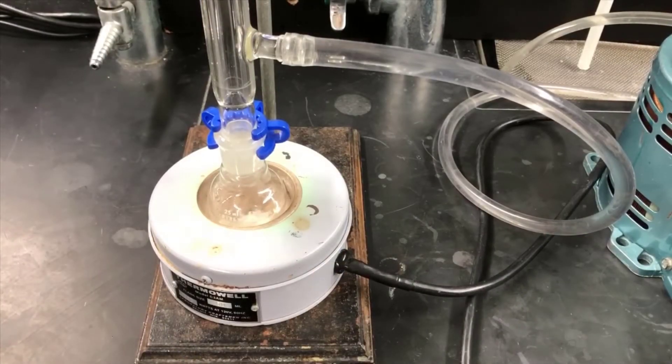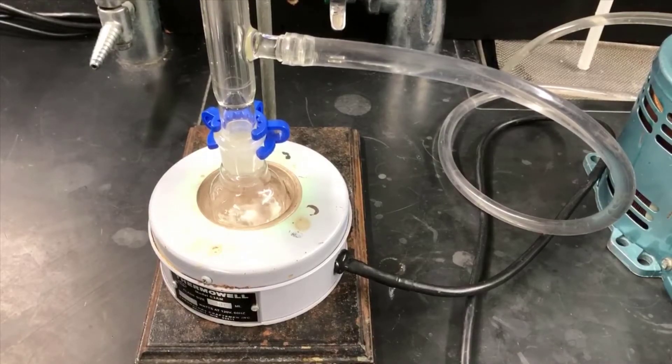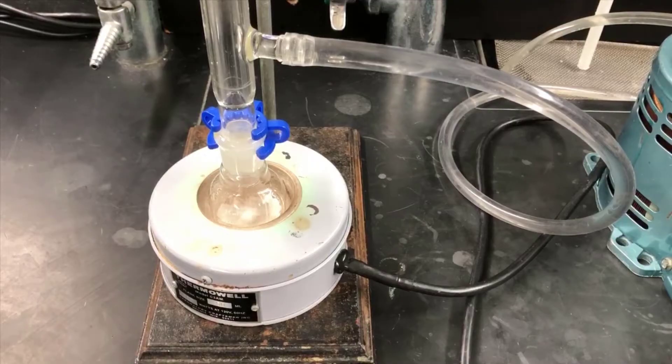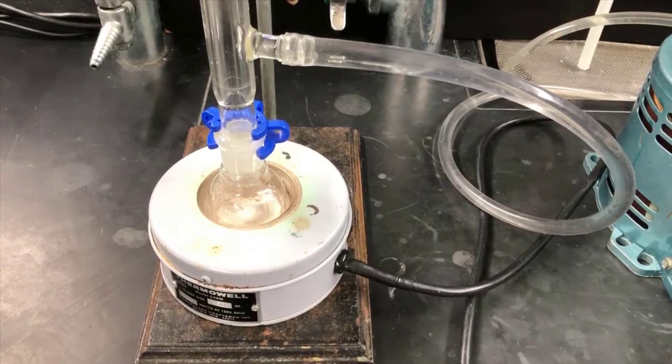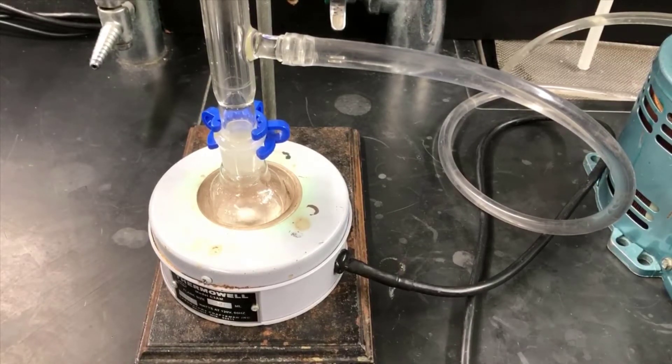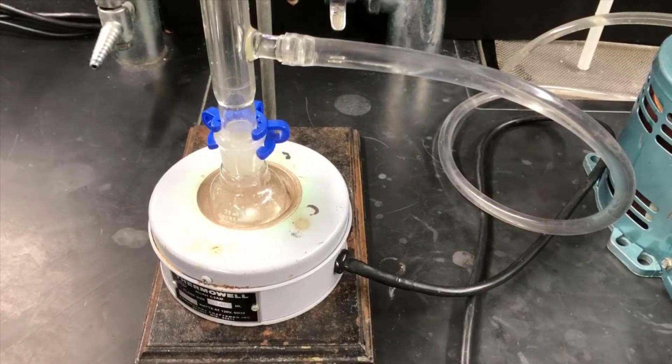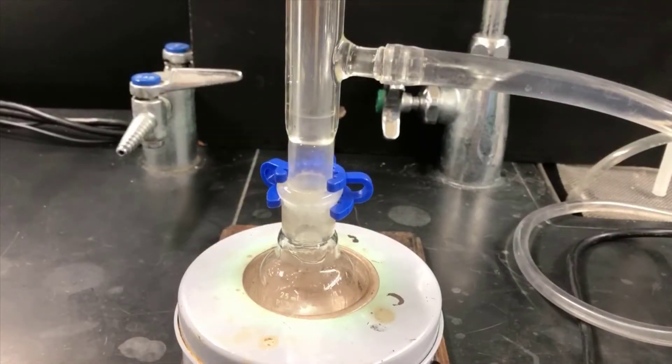As the reaction heats up, you'll notice the solid reagents begin to dissolve in the xylene. Then eventually you'll see bubbles. Eventually those bubbles become vigorous and vapor will travel up the apparatus and hit the condenser and condense back to a liquid and fall back down. The up-down motion of the solvent, vaporizing, rising, condensing, and falling, is what we mean by reflux. The process is being sped up here for purposes of the video.